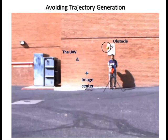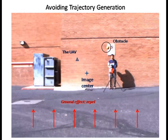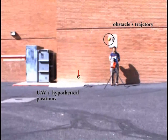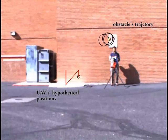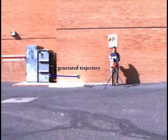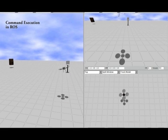In the potential field method, we imagine the obstacle in the ground to repel the UAV while the image center attracts it. The three combined imaginary forces on the UAV platform are then used to generate a hypothetical position for the UAV. This process is repeated until the distance between the image center and the current hypothetical position exceeds some threshold. The UAV then begins to move towards the current hypothetical position.